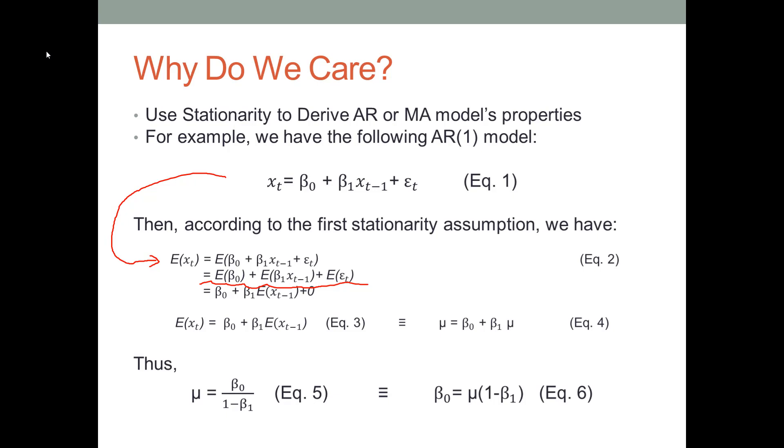We can transform equation 2 to equation 3, as you can see on this slide. We just learned the stationary assumptions. We said a time series dataset has a constant mean, which means E(x_t) and E(x_{t-1}) are equal. They are both equal to μ.